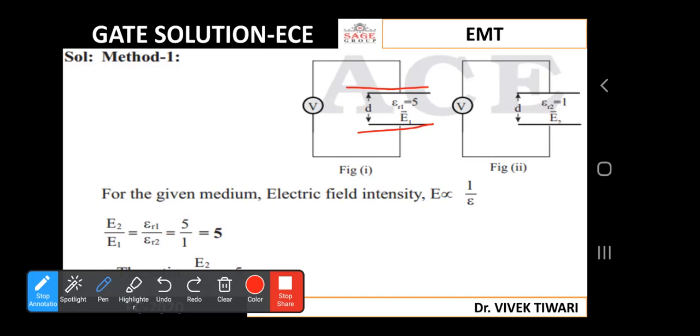In the second case, we have pulled out all the dielectric material, so there will be only air inside the capacitor. Its permittivity is known, εr2 equals 1. Now we have to find out the ratio between electric field with dielectric material of permittivity 5 compared to air.